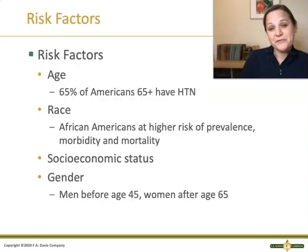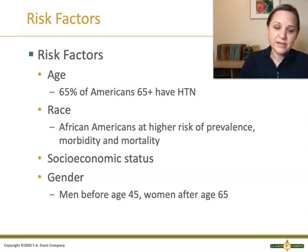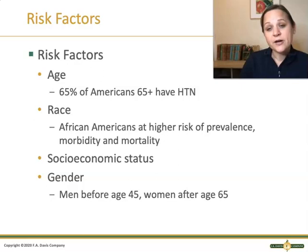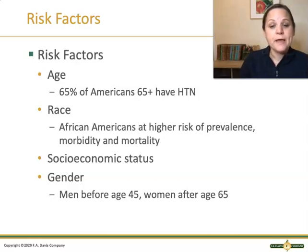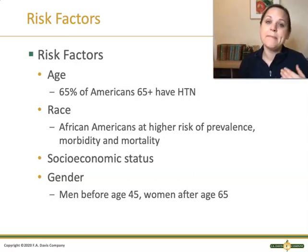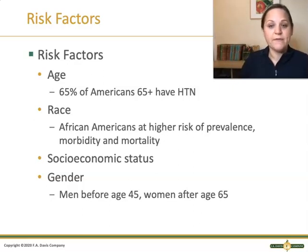There are a number of different risk factors for high blood pressure. Age is certainly a factor — 65 percent of Americans 65 and older have high blood pressure. African Americans are at higher risk of prevalence and also at higher risk of having major illness and even dying from high blood pressure. Socioeconomic status is also impacted — the lower someone's socioeconomic status, the higher their risk. Although high blood pressure affects men and women equally, men are more likely to get it early before age 45, and women tend to get it later in life, after age 65.